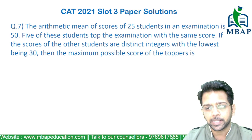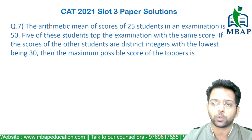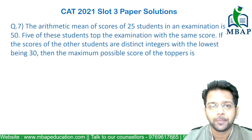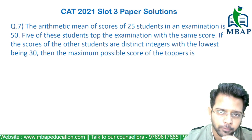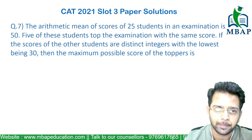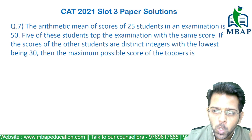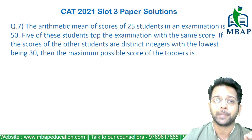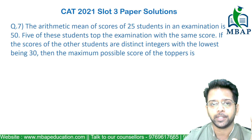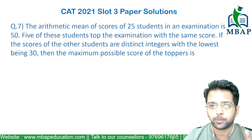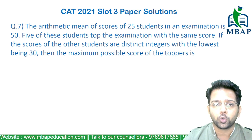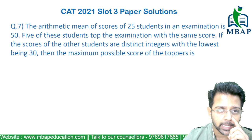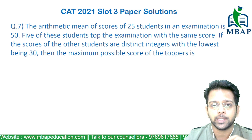The next question is a simple arithmetic question from JEE 2021, Slot 3. The question says: the arithmetic mean of scores of 25 students in an examination is 50. Five of these students top the examination with the same score — we can assume all of them to be x. The scores of the other students are distinct numbers, with the lowest being 30.